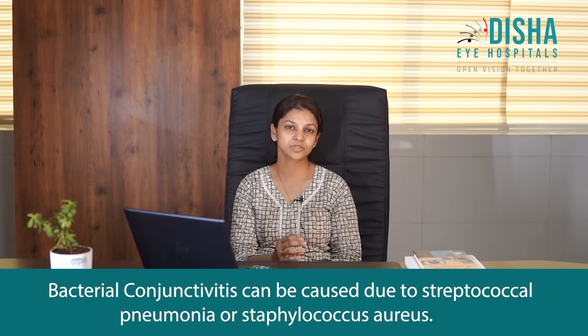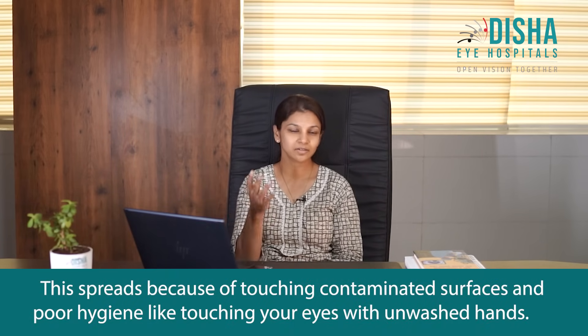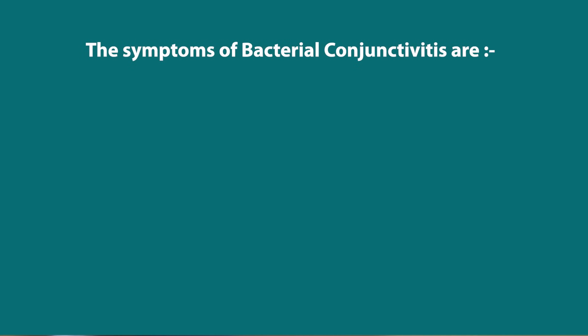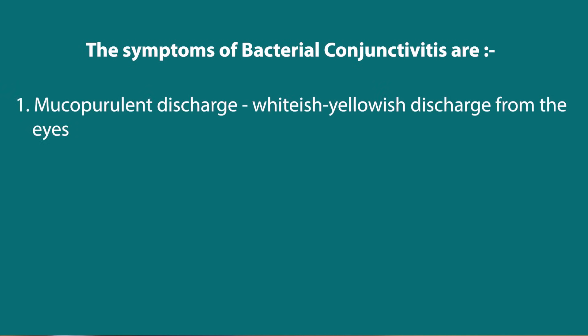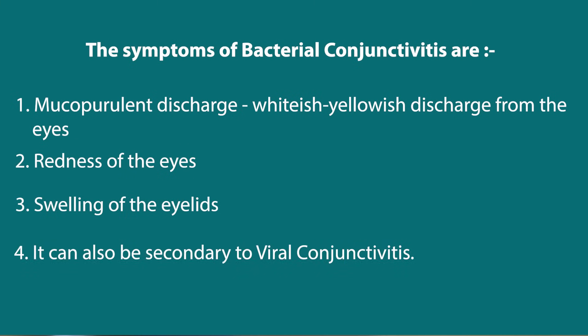The second cause being bacterial. Bacterial conjunctivitis can be due to Streptococcal pneumoniae or Staphylococcus aureus — these are two different types of bacteria which are the usual causes of bacterial conjunctivitis. It is usually seen with touching contaminated surfaces and poor hygiene, such as touching your eyes with unwashed hands. The usual symptoms are mucopurulent discharge — a whitish yellowish discharge in the eye — along with redness of the eyes and swelling of the lids. It can also be secondary to a viral conjunctivitis.